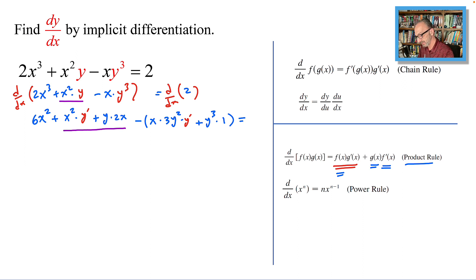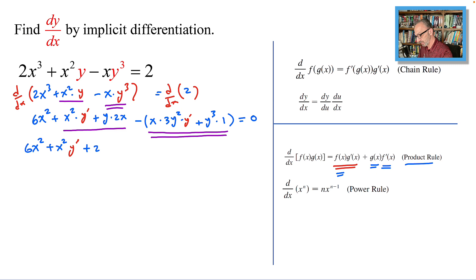On the right side, d/dx of 2 equals 0. With the minus sign distributed outside the derivative, distributing the minus sign I have: 6x² + x²y' + 2xy - 3xy² times y' minus y³ = 0.